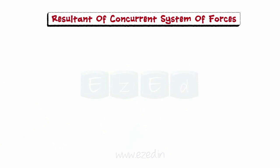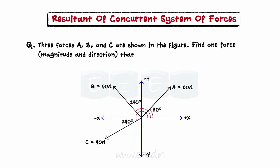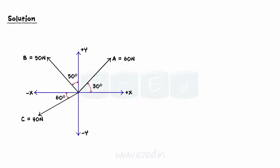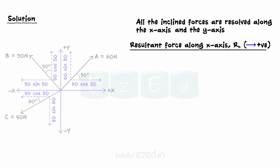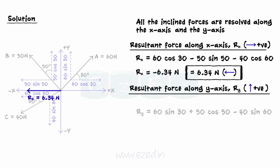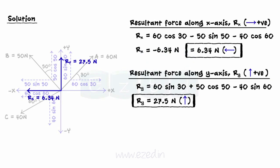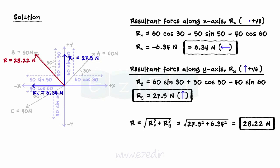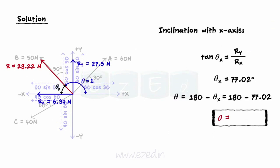Let's see the following example. Three forces A, B, and C are shown in the figure. Find one force — magnitude and direction — that will have the same effect as the three forces. Firstly, all the inclined forces are resolved along the x-axis and y-axis. Then, we find the summation of forces along the positive x-axis and y-axis respectively. Along the x-direction, this is found to be 6.34 Newton to the left, and along the y-direction, it is 27.5 Newton upwards. Then, we find the resultant using the following relation; the resultant is found to be 28.22 Newton. Its inclination with the positive x-axis is found to be 102.98 degrees.